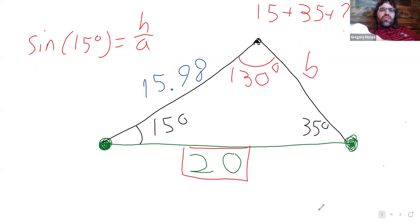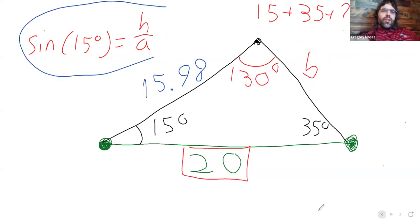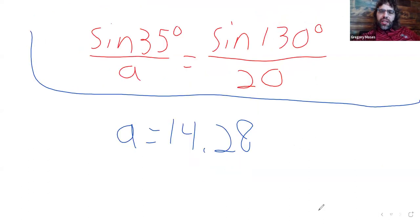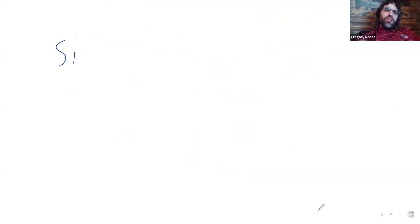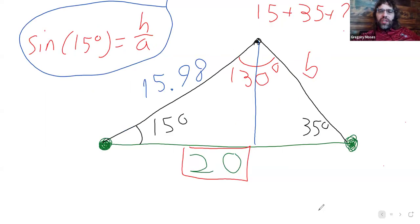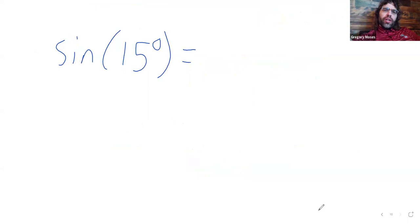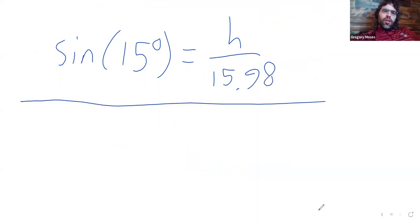And as discussed, once we know what a is, we can find what the height is. The sine of 15 degrees equals h divided by 15.98. Multiply both sides by 15.98.